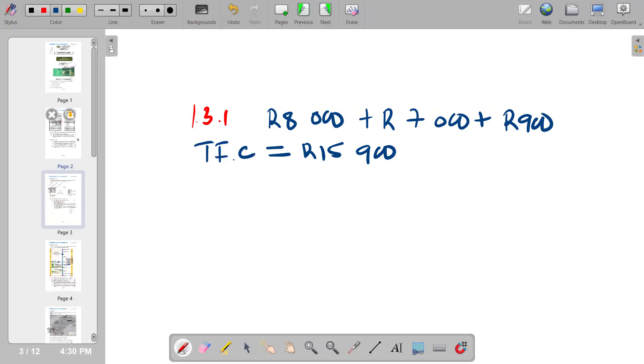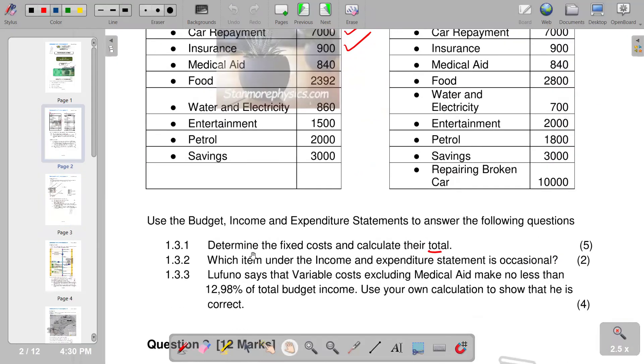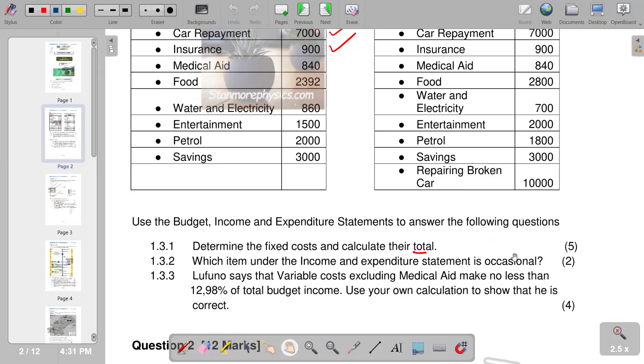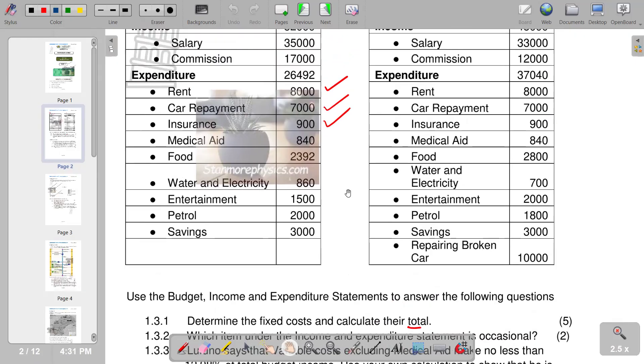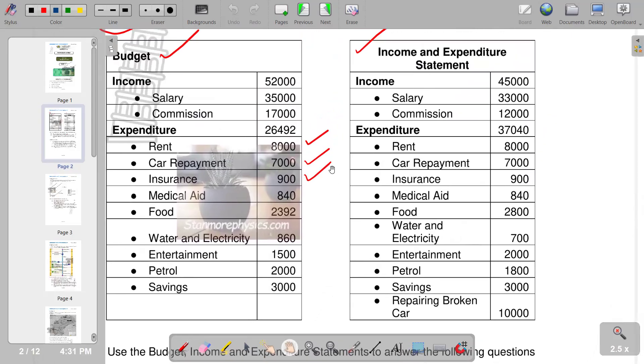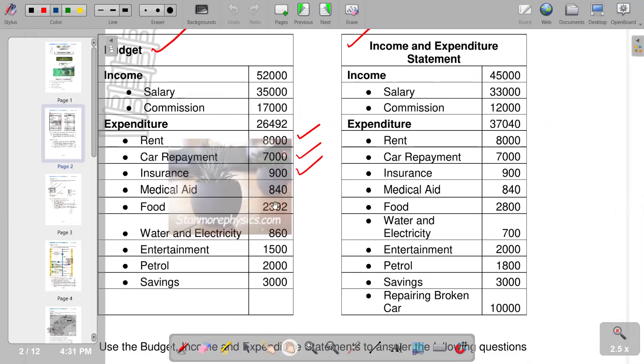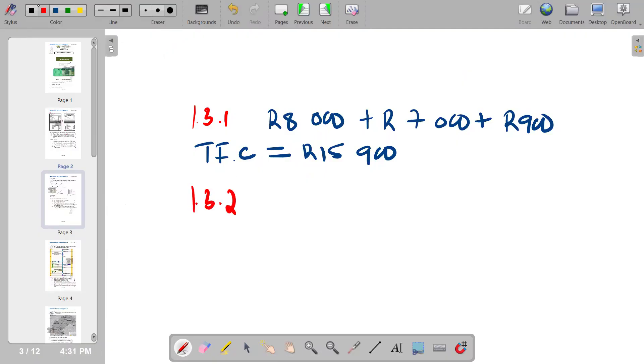Moving to the next part of our question, 1.3.2: which item under the income and expenditure statement is occasional? This is an item that is not regular, that we don't see from period to period, that only occurs occasionally. If you check the expenditure part, we have repairing a broken car, which is an occasional item.